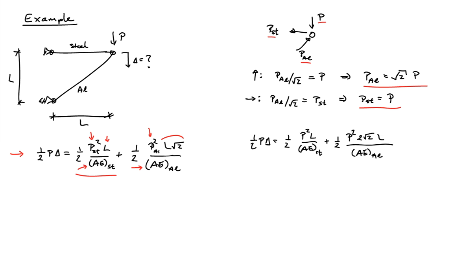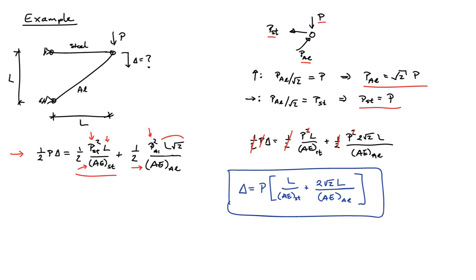On the right-hand side, for the steel term, PST just becomes P, so I get P squared. And PAL is root 2P, so I pick up P squared times 2 in the numerator. I can now cancel the one-halves on both sides, and cancel a P from both sides. I then have my final relationship that the motion delta is equal to P times this combination of terms. This is a nice example of using conservation of energy to extract out one bit of information about a system.